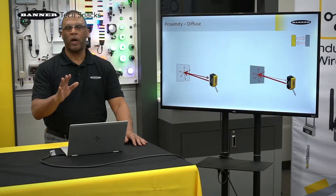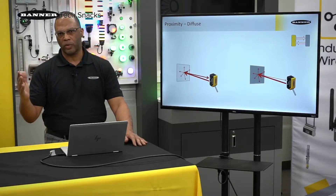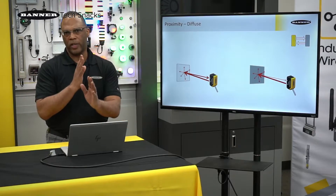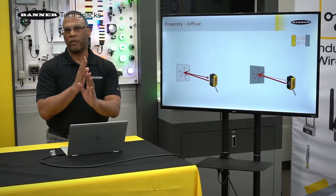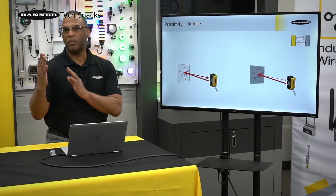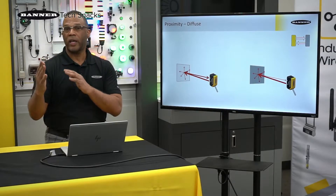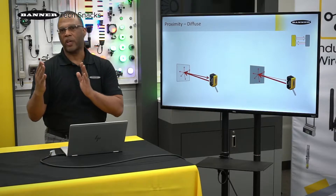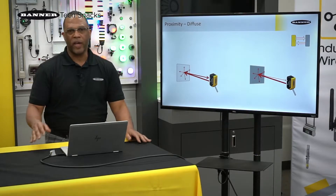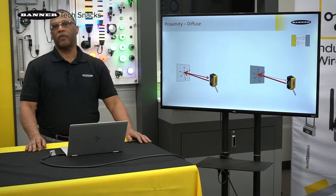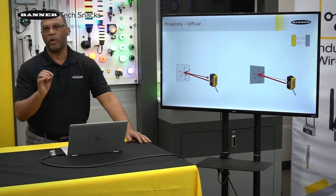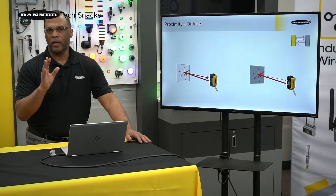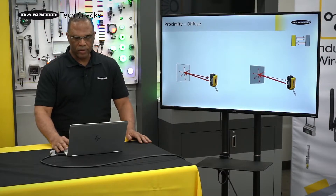Also, there's no cutoff distance with diffuse sensors. So if you need to detect a box on a conveyor but there's a shiny object behind it, it may see the box and the shiny object. The advantages of diffuse, however, are that they're very low cost and work great in simple applications.